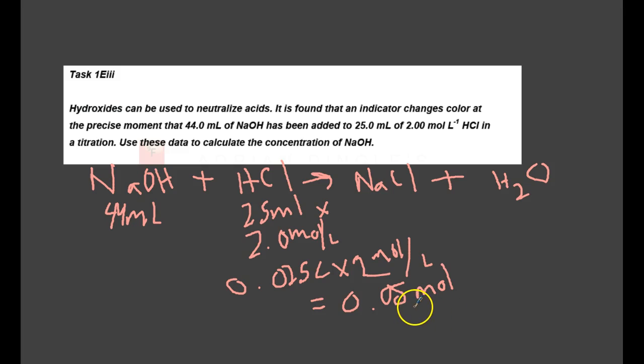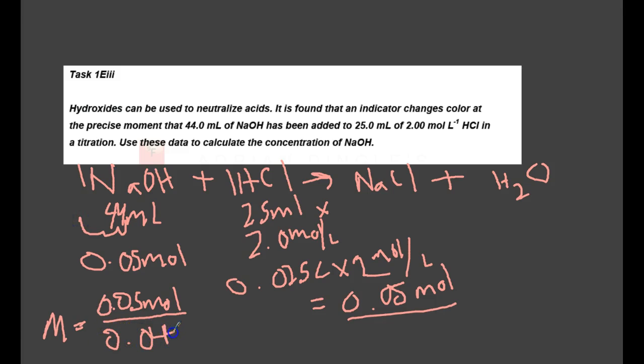If we need 0.05 moles of HCl, and it's a one-to-one ratio, we must need exactly 0.05 moles of NaOH for them to reach neutralization or the end point. We want to find the concentration, and the concentration is molarity, which is moles divided by liters. So we'll take the 0.05 moles and divide by the volume. But it can't be milliliters, it's got to be liters. So we have 0.044 liters.